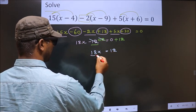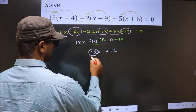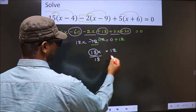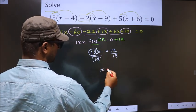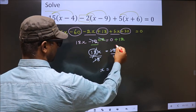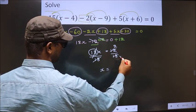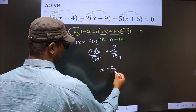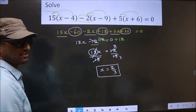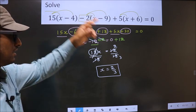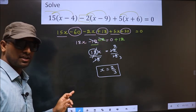Now to get x you should remove 18, so to remove 18 you divide by 18 on both sides. So this cancel out, here x equal to, here 6 2's 6 3's, so we are left with 2 by 3. This is our answer. Am I clear?